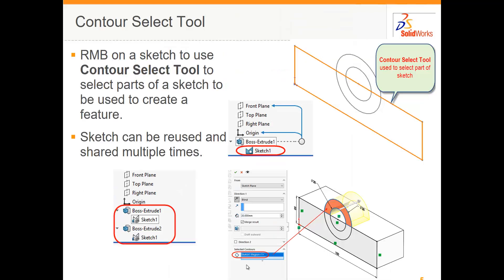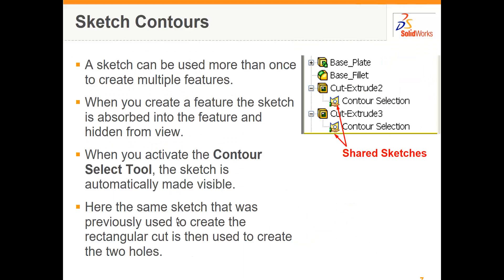When you use the contour select tool you can extrude different parts of the same sketch. When you reuse a sketch you'll see the hand symbol underneath the sketch contour symbol, telling you that you've shared or reused the sketch. Here again the same sketch is being used to create different features, as indicated by the hand symbol.